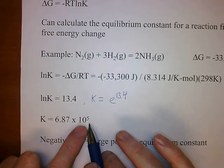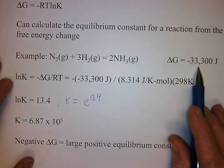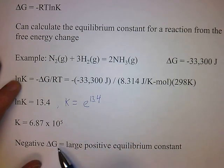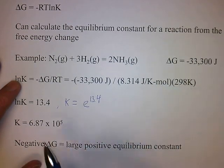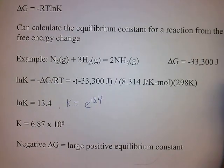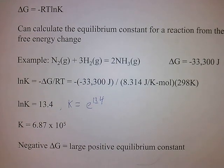Note that this is a big number — when you have something to the 5th power, it's a big number. Delta G was a large negative number and K is a large positive number. A negative delta G equates to a positive equilibrium constant, and a large negative delta G equates to a large positive equilibrium constant. So we're tying together these two measures of predicting whether a reaction will occur spontaneously.